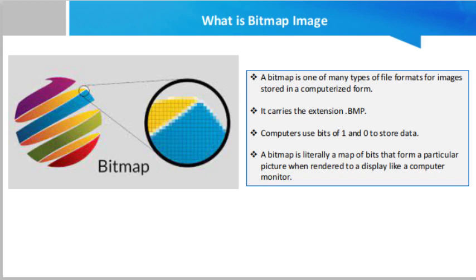To understand how a bitmap image displays, it's important to understand the computer display screen. The display is made up of rows and columns of tiny blocks or pixels. In a bitmap image, each pixel is assigned at least one bit to indicate whether the pixel should reflect the background color, the foreground color, or some other color. In the case of a page of black and white text, the many pixels that make up a single letter only require one bit of data each — either the pixel will be black or white, 1 or 0.